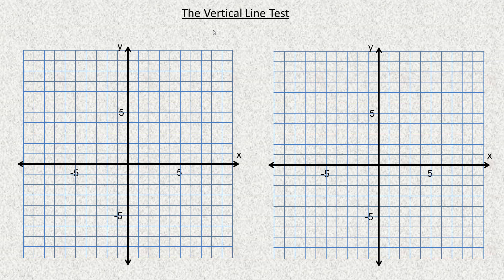The purpose of this tutorial is to show how the vertical line test can be used to determine if a graph of some line or curve is a function or is not a function. Now everything is a relation, so I'm going to start with an example that has a line here. I'm going to show you eight different graphs. For a few of these I'll write out the equation, although you really don't need to know what the equation is to use a vertical line test.